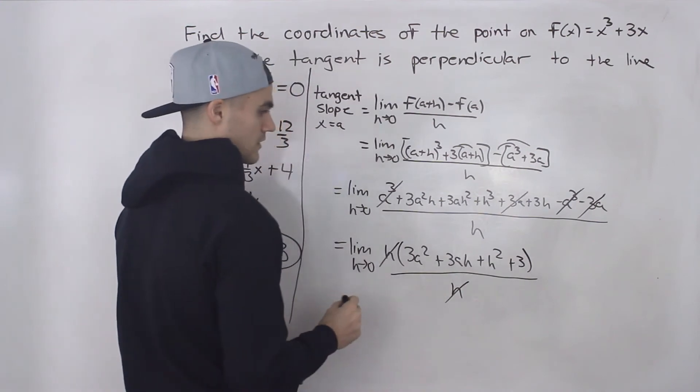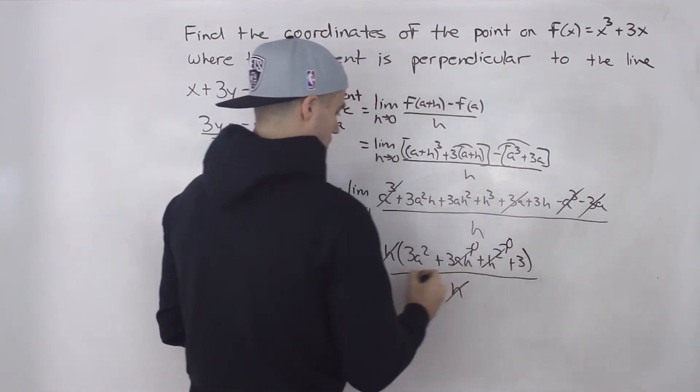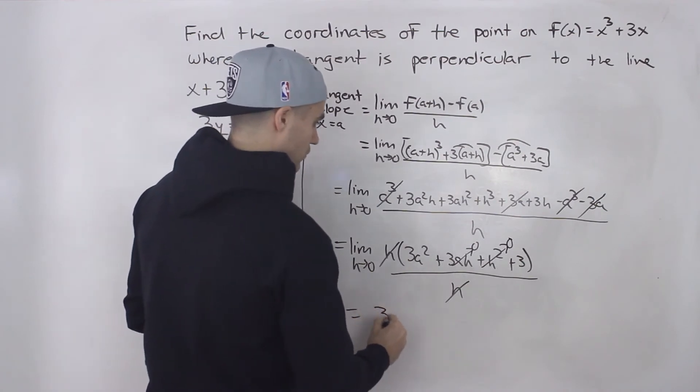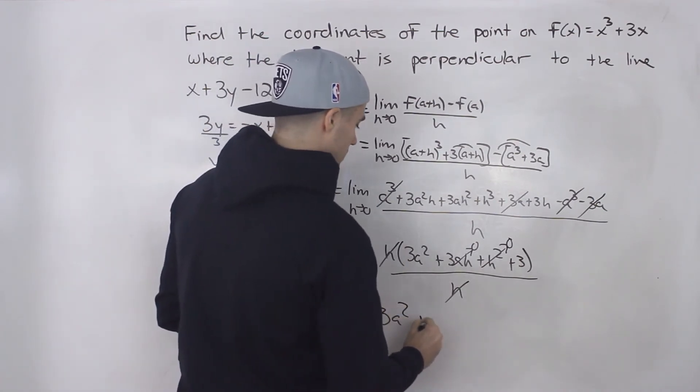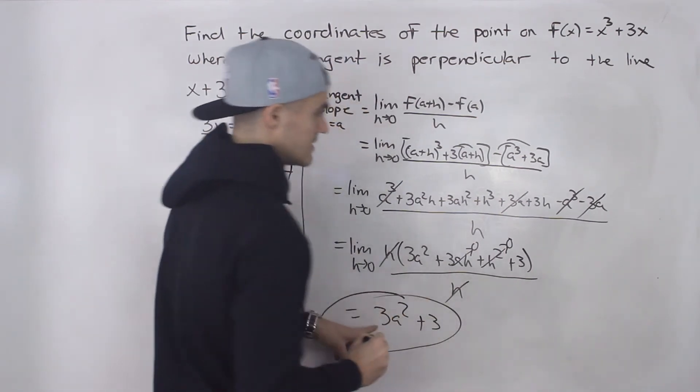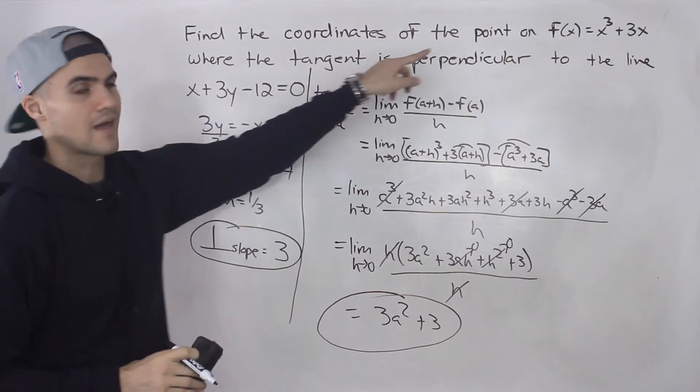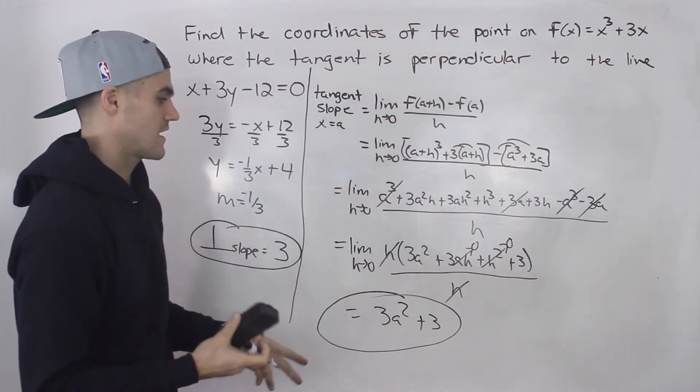h's cancel out, and then we can plug in 0 for h. So we're just left with 3a² + 3. So this here is the general expression for the slope of the tangent of that function at any x value a.